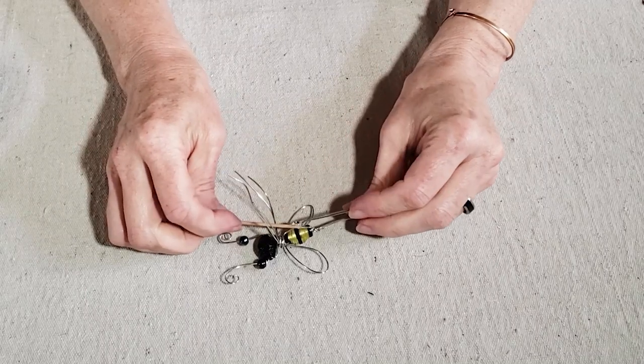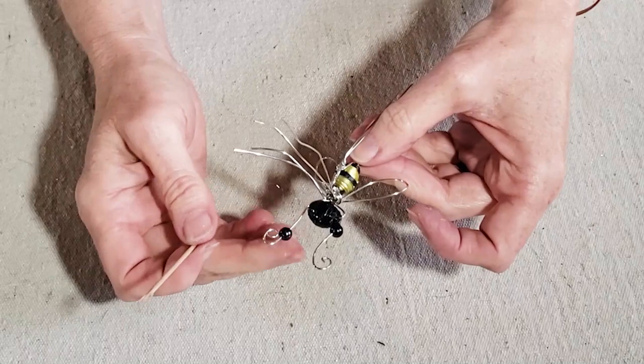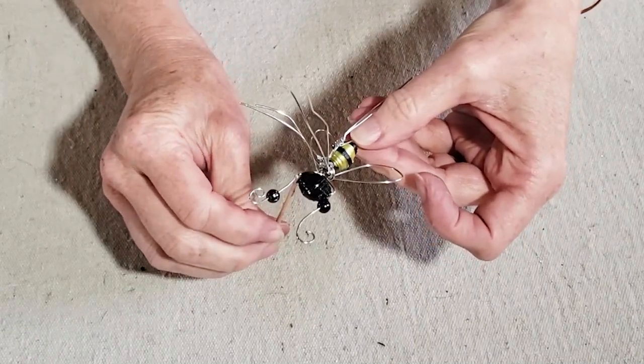And then before I shape the legs, I'm going to go ahead and add a little bit of E6000 glue to hold the wires in place. And while I'm at it, I'm going to go ahead and put a little glue on my round beads to secure the eyes in place as well.